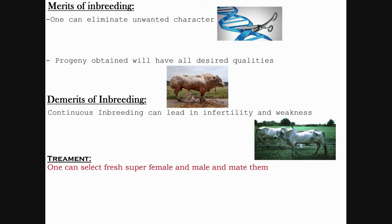Through inbreeding, one can obtain a pure line breed. Also, undesirable or harmful genes that exist are showcased and then eliminated, leaving only the required and superior genes in the progeny. However, a demerit is that continuous inbreeding can reduce fertility and productivity. To eradicate this, super female and male are again selected and bred, which helps in restoring fertility and yield.